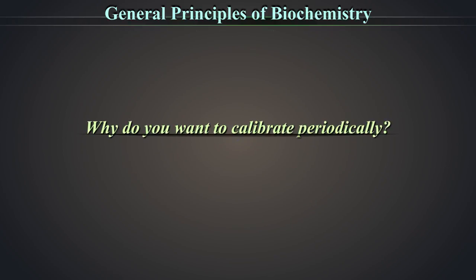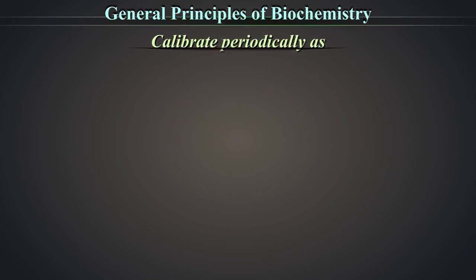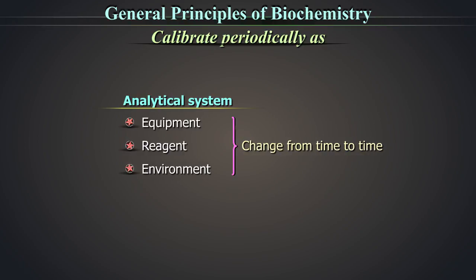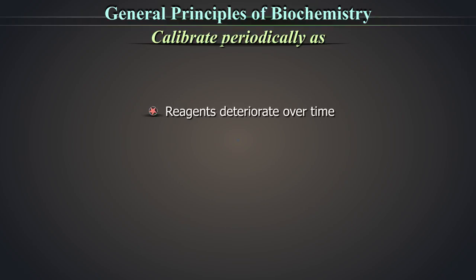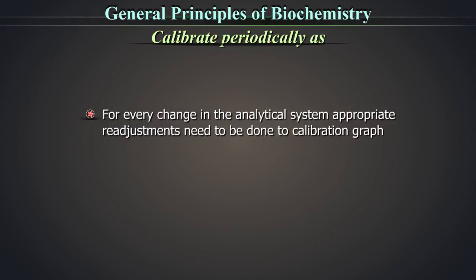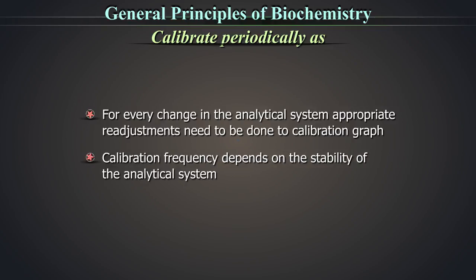Why do you want to calibrate periodically? We have to calibrate periodically as the analytical system, equipment, reagent and environment change from time to time. Reagents deteriorate over time, equipment has wear and tear, room temperature fluctuates and so on. For every change in the analytical system, appropriate readjustments need to be done to the calibration graph. So your calibration frequency depends on the stability of the analytical system.